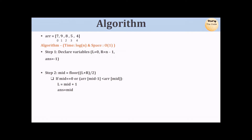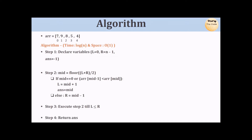Otherwise, we are in the strictly decreasing sequence, so our largest element lies on the left of the middle. We shift the right pointer to mid-1. We repeat this process while left is less than or equal to right. When left and right cross each other, we have found the index of the largest element, stored in answer. At last we return the element at index answer.